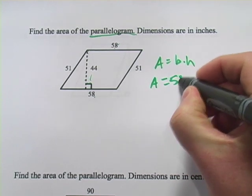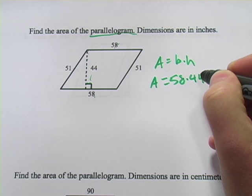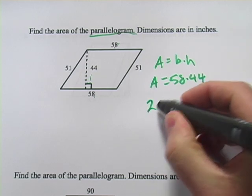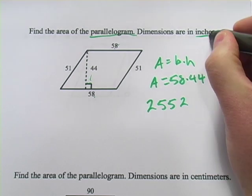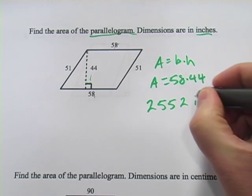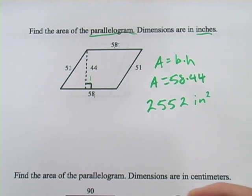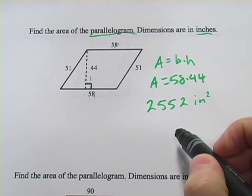So this one is 58 times 44, and if you punch that in your calculator, you should get 2,552. Now, they told us the dimensions were in inches here, but this is area. So remember, this is going to be square inches when we get the answer for area.